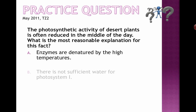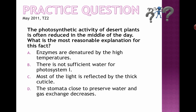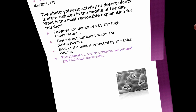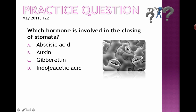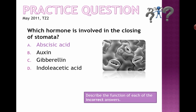A few practice questions to end. Pause the video, take a look, and hopefully you've covered some photosynthesis so you understand what's going on. Which hormone is involved in the closing of stomata? The options are auxin, gibberellin, and indoleacetic acid — but the correct answer is obviously abscisic acid. That's everything you need to know about transpiration. Try to figure out how to change the question to cover auxin and gibberellin, as those are ones you need to know for the IB biology syllabus.